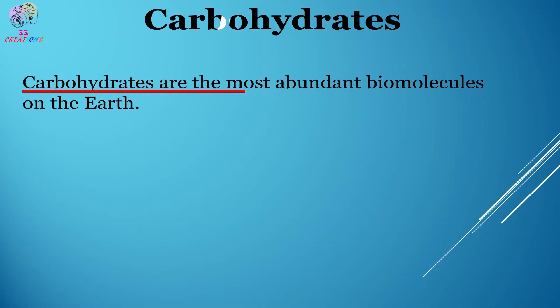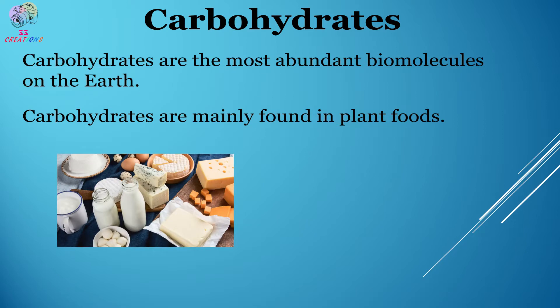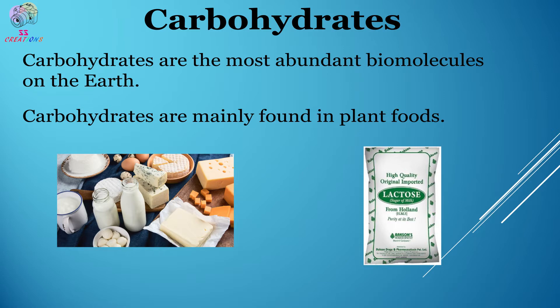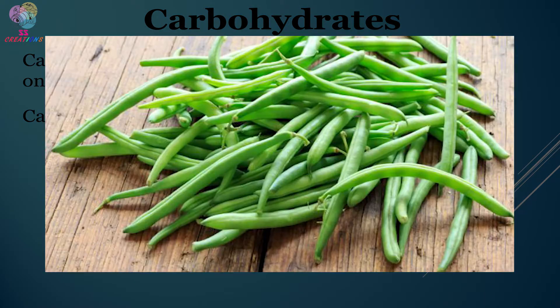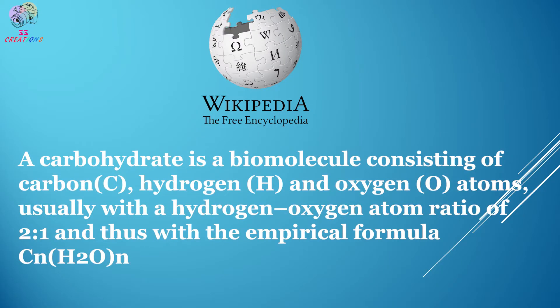Carbohydrates are the most abundant biomolecules on the earth. Carbohydrates are mainly found in plant foods; they also occur in dairy products in the form of a milk sugar called lactose. Foods high in carbohydrates include bread, pasta, beans, potatoes, rice, and cereals. According to Wikipedia, a carbohydrate is a biomolecule consisting of carbon, hydrogen, and oxygen atoms, usually with the hydrogen-to-oxygen atom ratio of 2:1, with the empirical formula Cₙ(H₂O)ₙ.